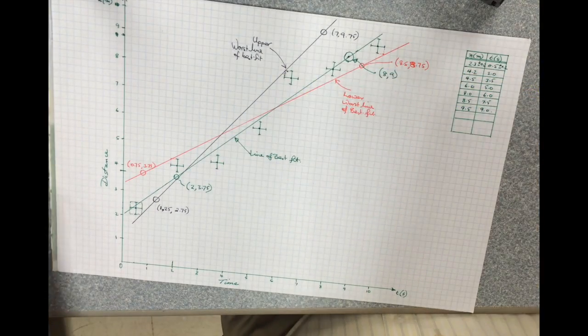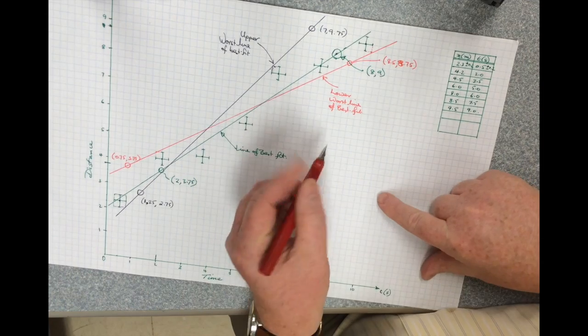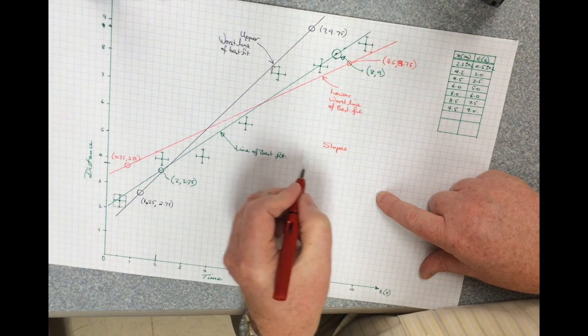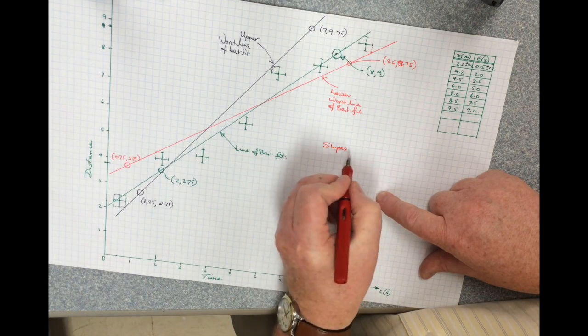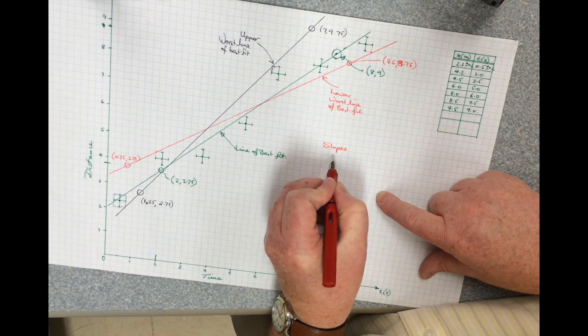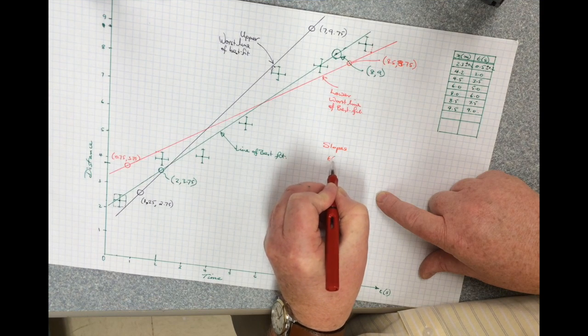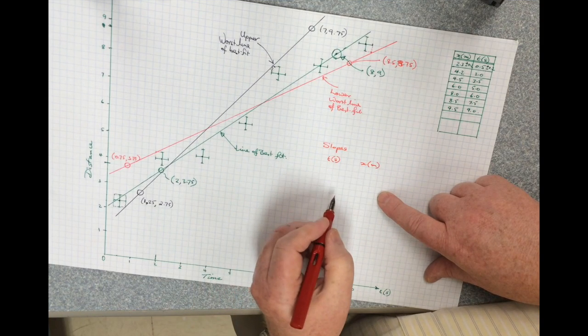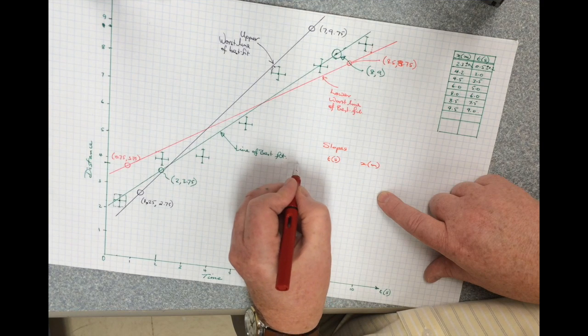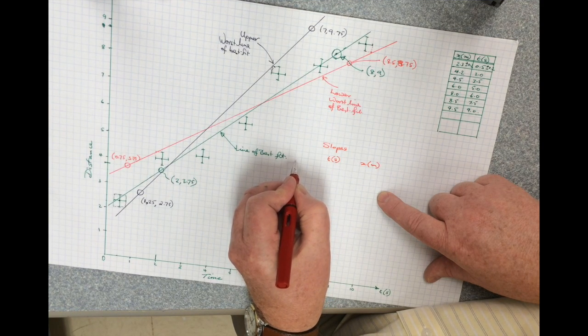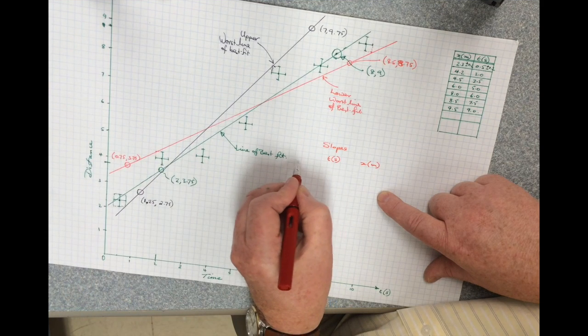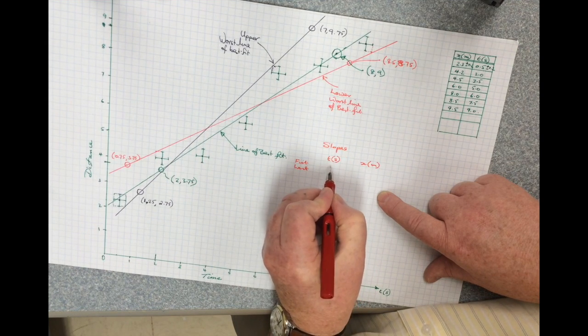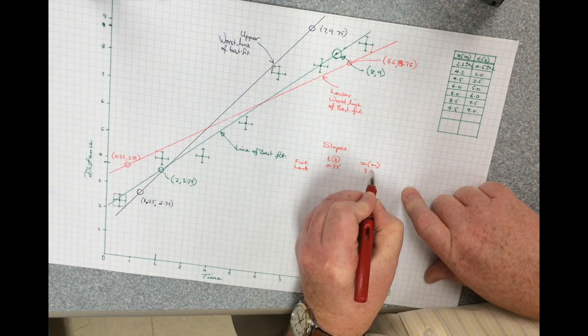So now what I do is I need to get the slopes of each of these. So I'm going to do a little table over here, get everything in order. And I'm going to have the, I'll use color coding in a second. And we'll call this our time in seconds and our distance in meters. And for the, we've got the start over here. That would be the first and the last. So we're talking about 0.75, 3.75.